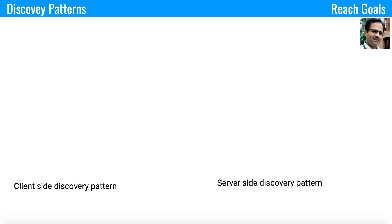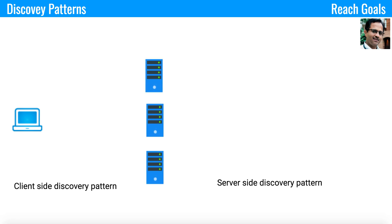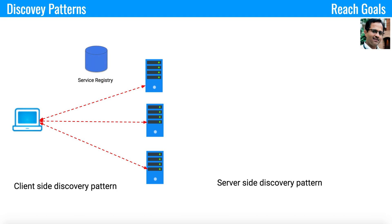There are two discovery patterns to discover services: the client-side discovery pattern and the server-side discovery pattern. In the client-side discovery pattern, the client connects to different servers or services. The services register themselves in the service registry, and the client uses the query API to get the available instances and connect to the appropriate services.